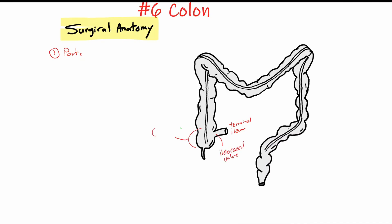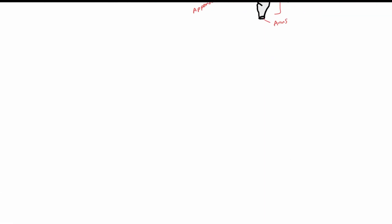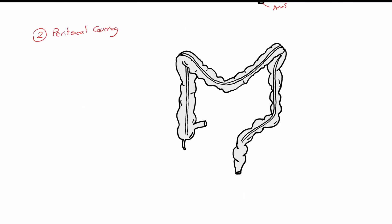Here we can see a quick review of the terminology of the parts of the colon, which starts as the junction with the terminal ileum, which is the ileocecal valve, then the cecum, ascending colon, hepatic flexure, transverse colon, splenic flexure or the left colonic flexure, descending or the left colon, sigmoid colon, rectum and anus.